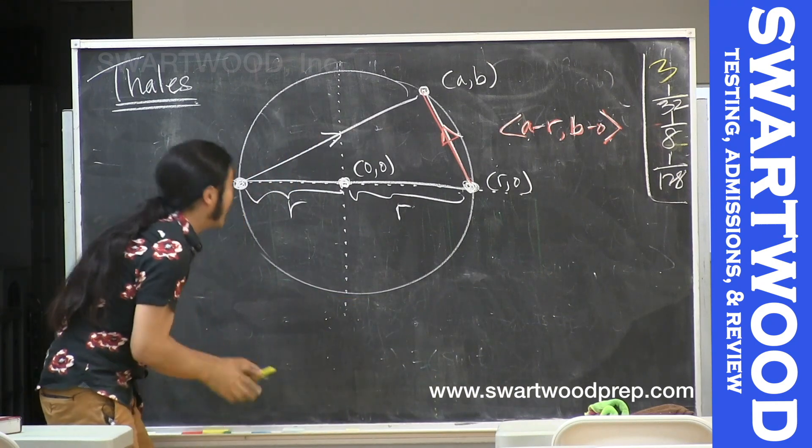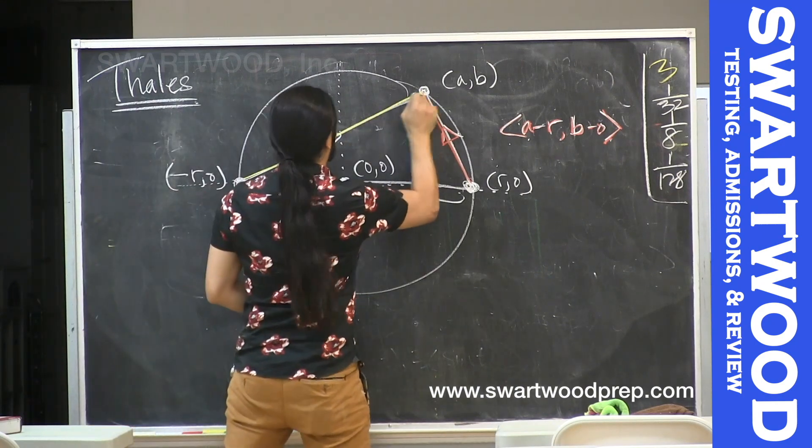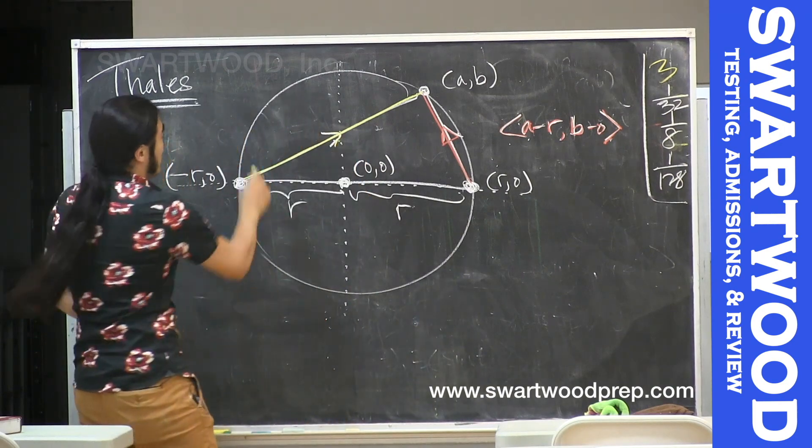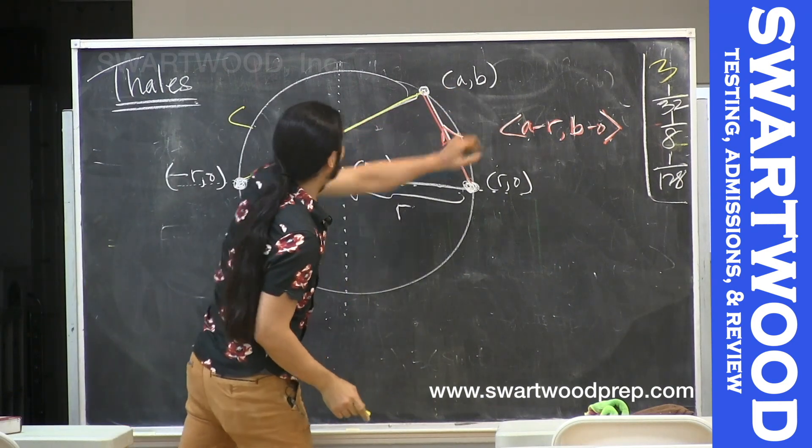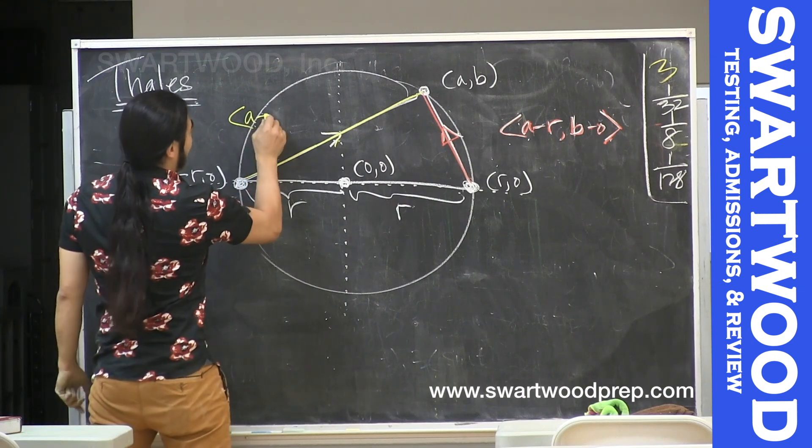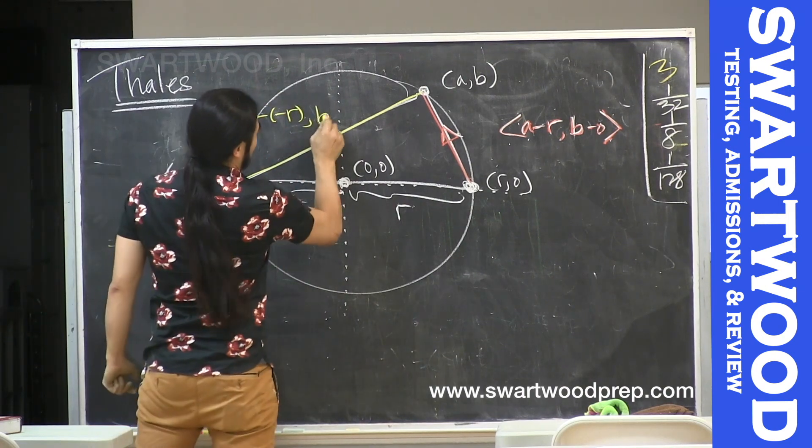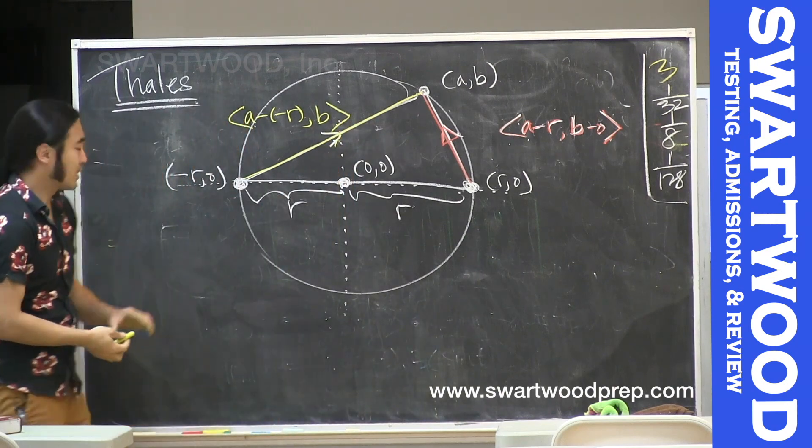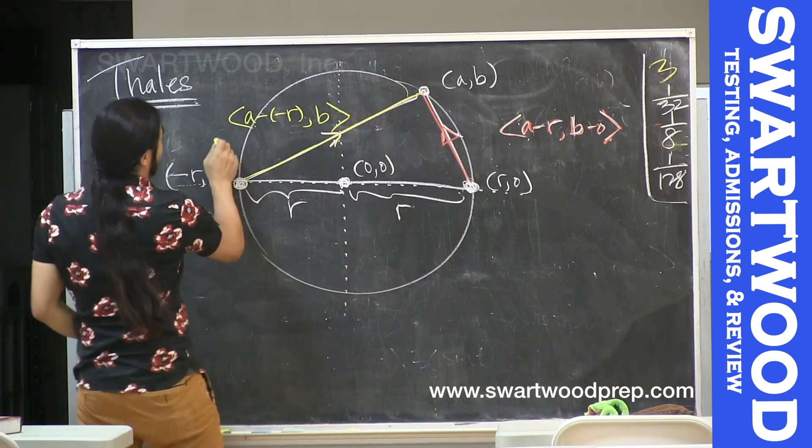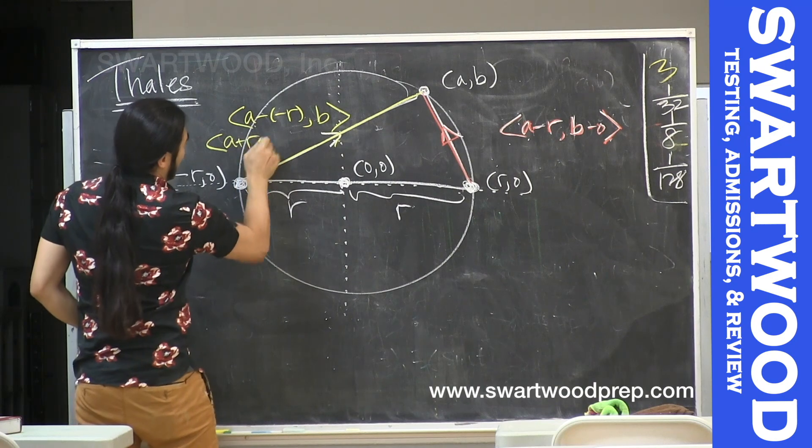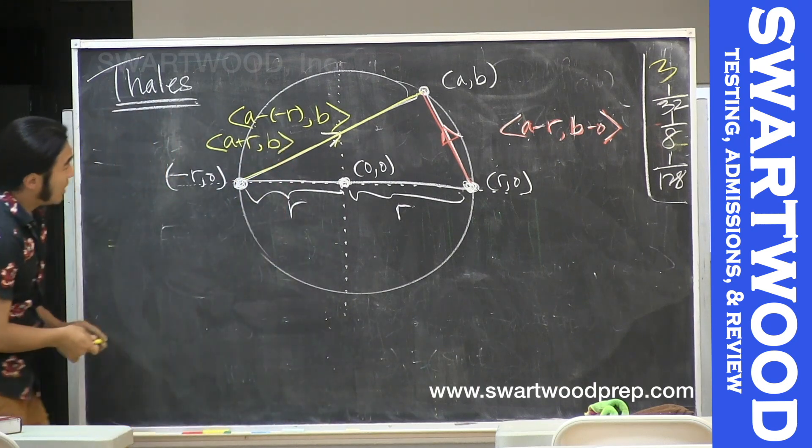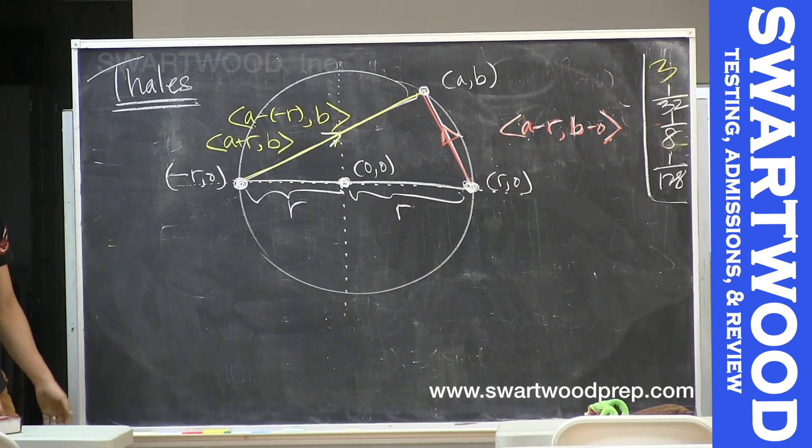Let's go for this guy. We're gonna do the same technique. This guy is gonna be, where you end up is (a,b), where you start is (-R,0), so it's gonna be (a - (-R), b - 0). So just b. Let's clean this up, so this is gonna be (a + R, b).